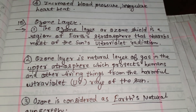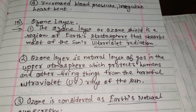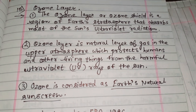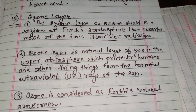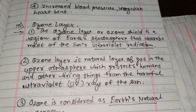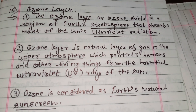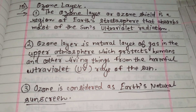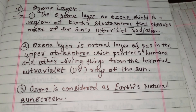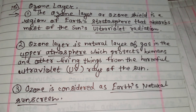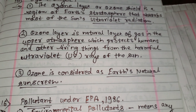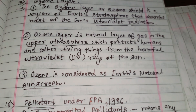The ozone layer is a natural layer of gas in the upper atmosphere which protects humans and other living things from the harmful ultraviolet (UV) rays of the sun. Ozone is considered the earth's natural sunscreen.